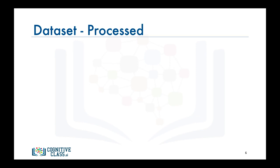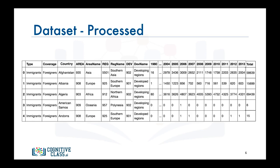Now let's process the data and add an extra column which represents the cumulative sum of annual immigration from each country from 1980 to 2013. For Afghanistan, for example, it is 58,639 total, and for Albania it is 15,699, and so on. Let's name our data frame DF_Canada.